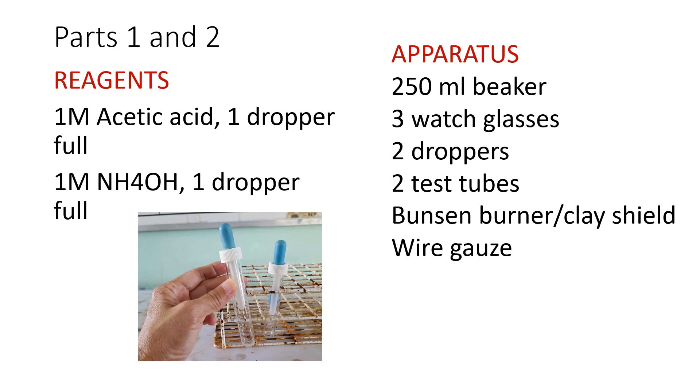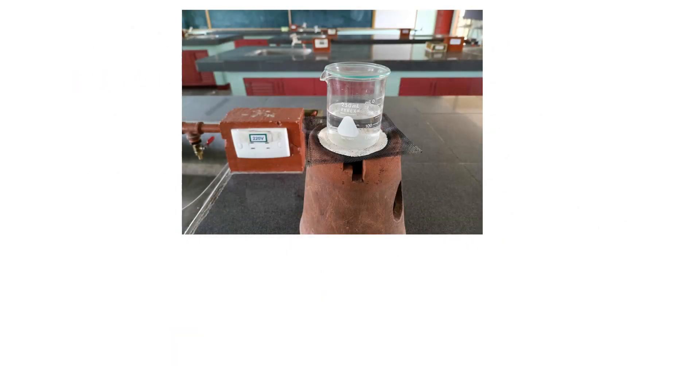this is about properties of the starting material. Part 1 of the experiment is about properties of the starting materials. Letter A, property of ammonium hydroxide. You will need 1 drop of ammonium hydroxide on a watch glass. And then you place this on top of a beaker with boiling water. Allow to boil for 15 minutes.